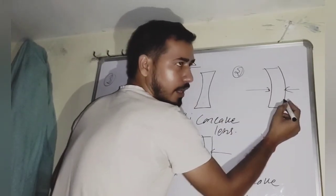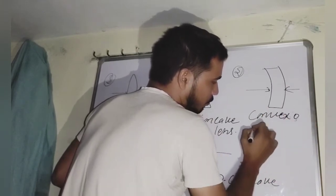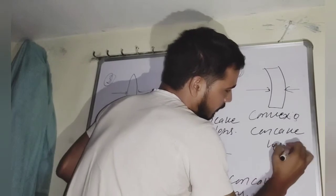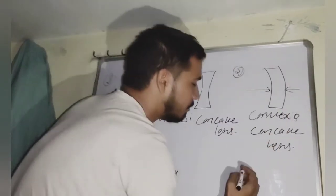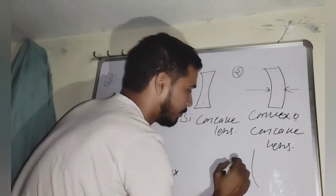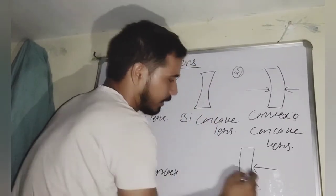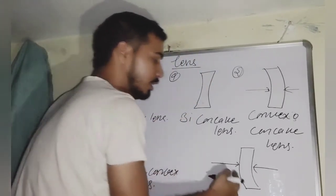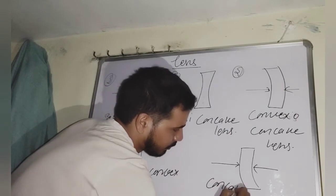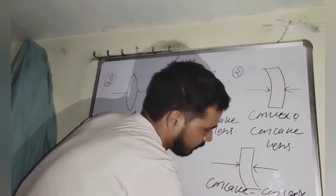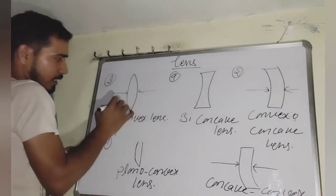If the right boundary is concave and the left boundary is convex, such a lens is called a concavo-convex lens. So right boundary concave, left boundary convex — that is the concavo-convex lens.